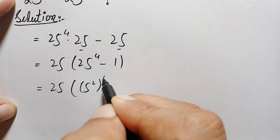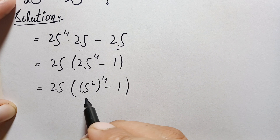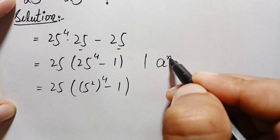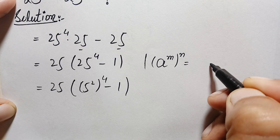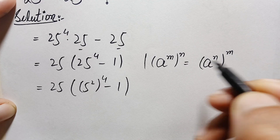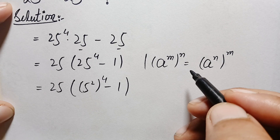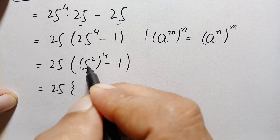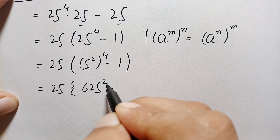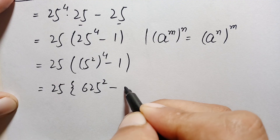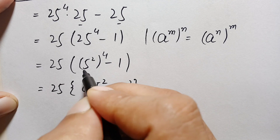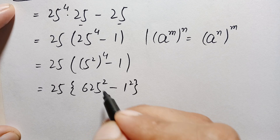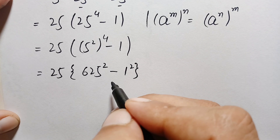We will use the exponential identity: a raised to power m, raised to power n, can also be written as a raised to power m×n — I interchange the position of powers. Using this identity, the expression becomes 25 times (5 squared) raised to power 4, which gives 5 raised to power 4 raised to power 2. Since 5 raised to power 4 is simply 625, this becomes 625 squared minus 1 squared.